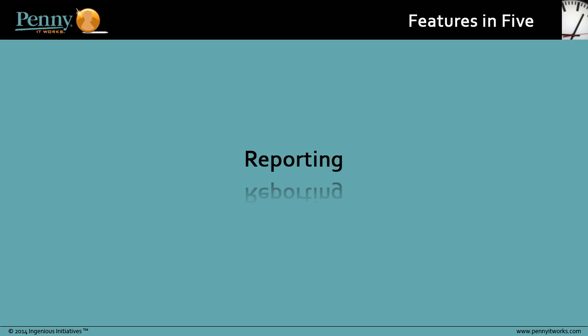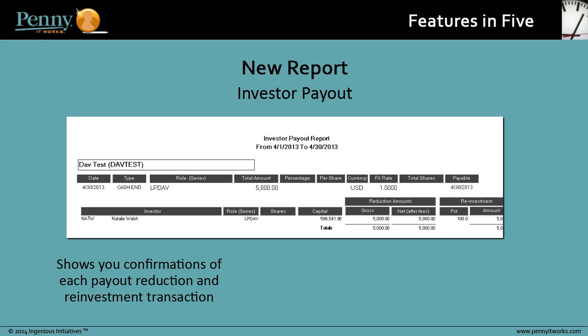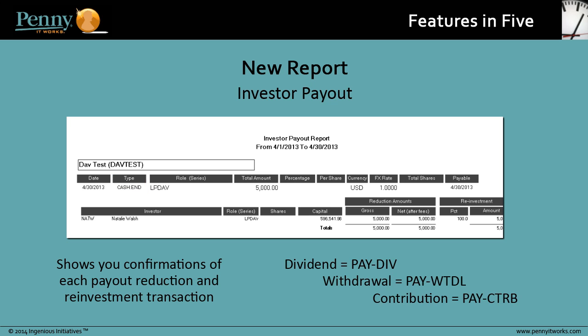And of course, we remembered the important aspect of reporting. A new Investor Payout Report shows you confirmations of each payout reduction and reinvestment transaction. There is a code for each transaction associated with a payout, such as a dividend, beginning or end withdrawal, or contribution reinvestment. Note that payout transactions are not displayed on the Investor Acknowledgement Report, since amounts and participating investors are calculated as part of period processing.